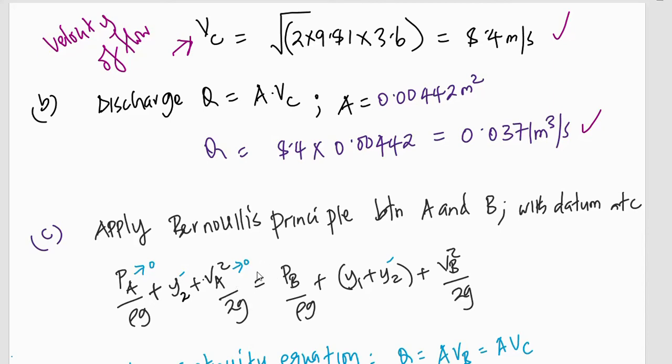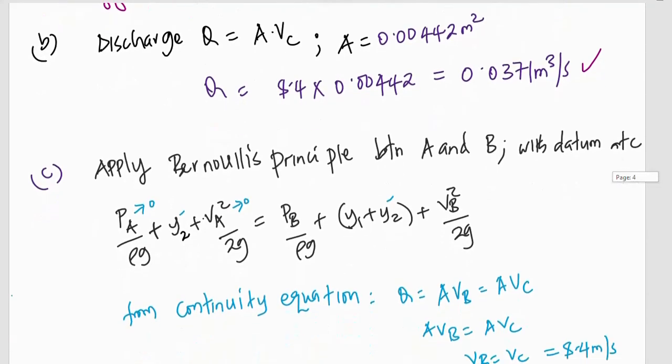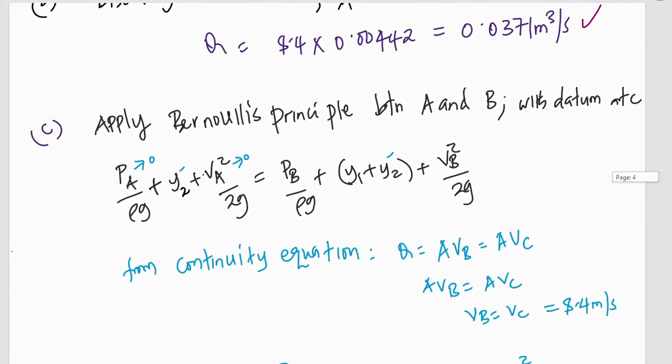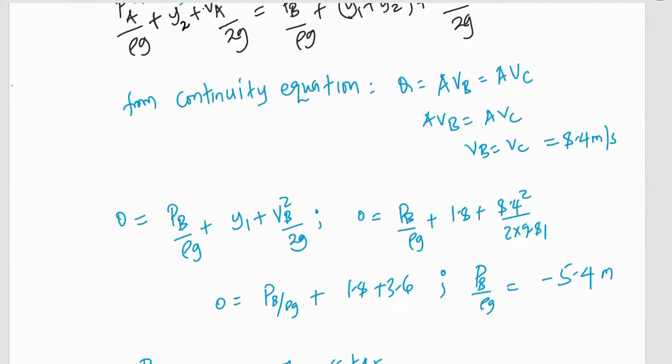Then, y_2 is the datum energy or elevation energy above datum at C to point A. V_A, remember, is 0. So, this will reduce to 0. P_A is atmospheric. Therefore, since we are dealing with gauge pressures in this particular equation, then P_A will reduce to 0. So, that we have y_2. Remember, y_2 and y_2 here can also cancel each other. So, that we remain with 0 plus 0 plus 0 equal to P_B out of rho G plus Y_1 plus V_B squared out of 2G.